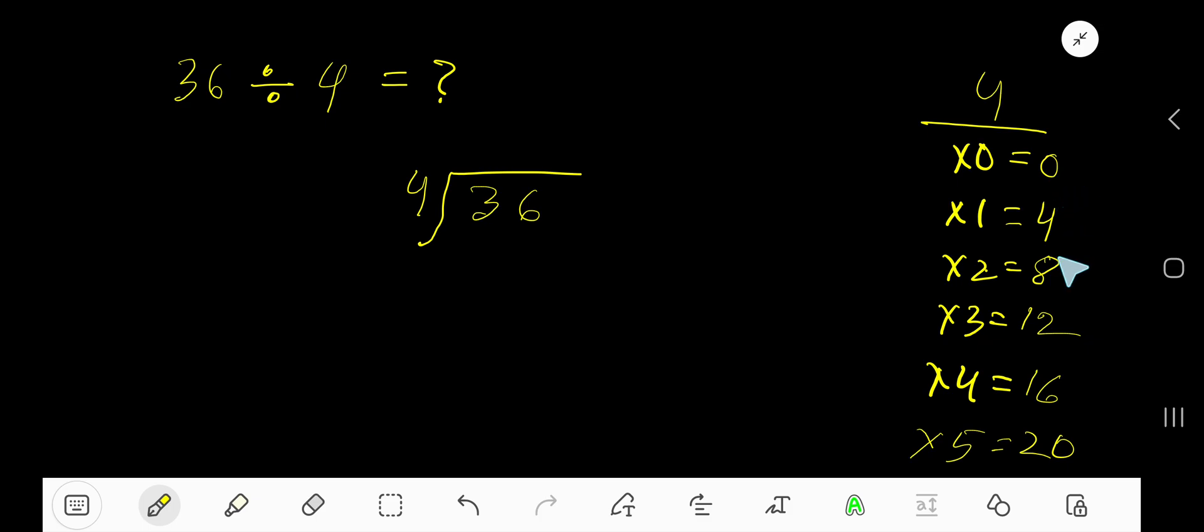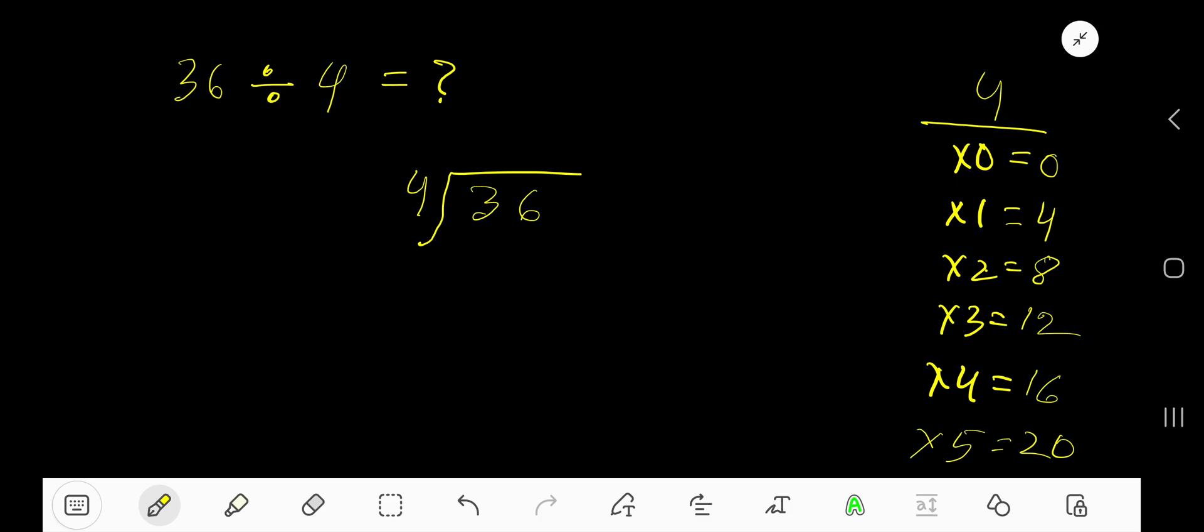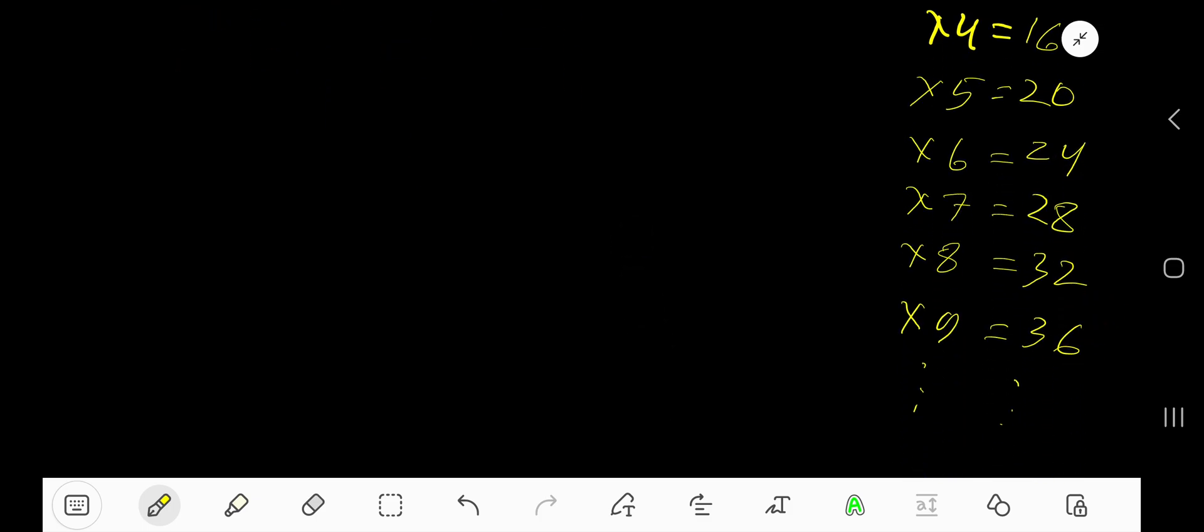To find out the multiplication table of 4, just add 4 with the previous step. 0 plus 4, 4. 4 plus 4, 8. 8 plus 4, 12. 12 plus 4, 16. Like this. 32 plus 4, 36.